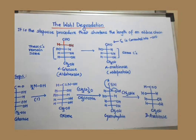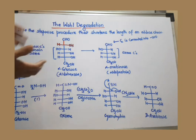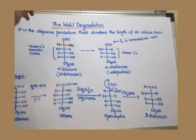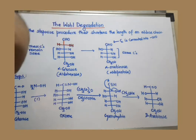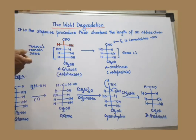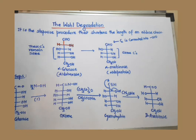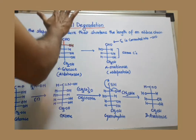This is Wohl degradation. What happens in this reaction? The chain is shortened — the length of the monosaccharide decreases. Aldohexose is converted to aldopentose, meaning a 6-carbon monosaccharide is converted to a 5-carbon monosaccharide. This is called a chain shortening reaction. D-aldohexoses are converted to D-aldopentoses.